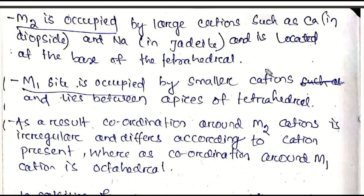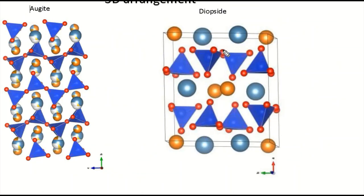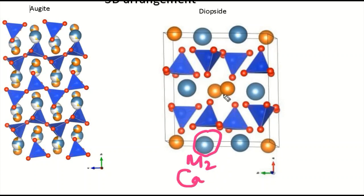M2 is occupied by larger cations such as Ca in diopside and Na in aegirine, and is located at the base of the tetrahedra. The base is large and M2 accommodates these larger cations. The top side, which is smaller, corresponds to the M1 site.